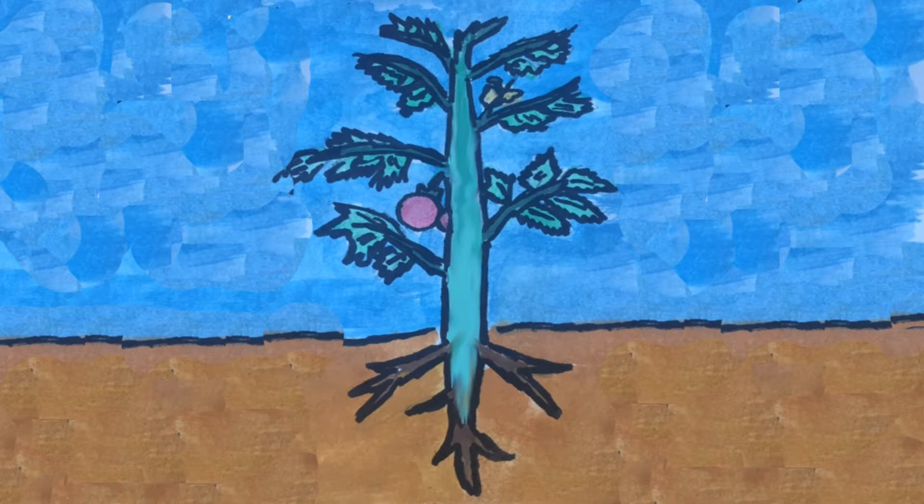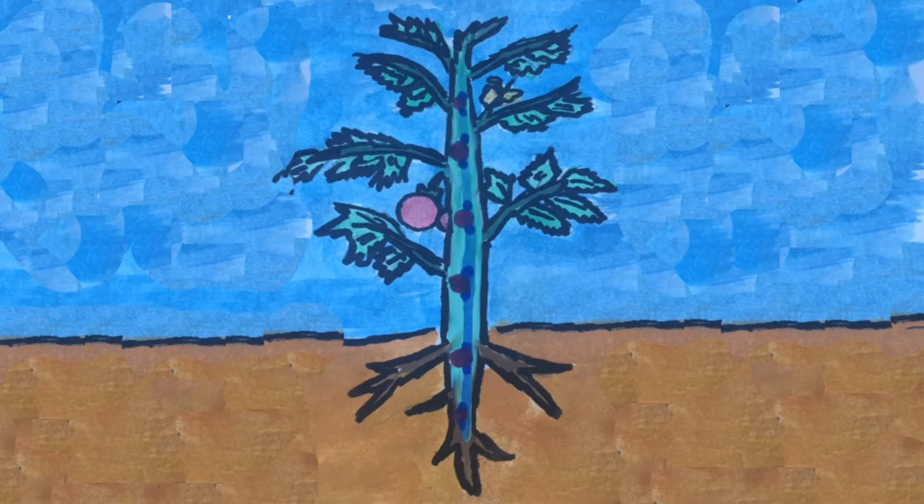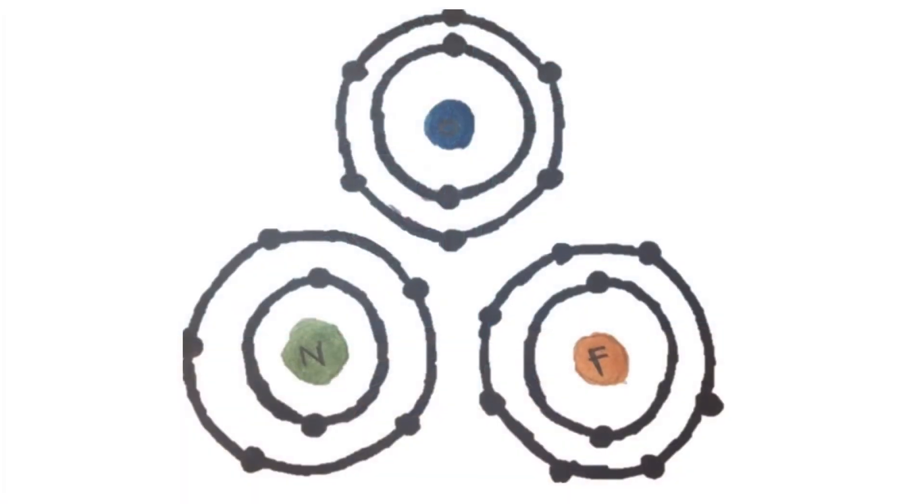Cohesion forces water molecules to stick to one another and fill the column. Adhesion allows water molecules to cling to each other on the sides of the column. This is how water is able to flow upward from the roots of a plant through the stem to the leaves.